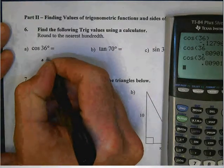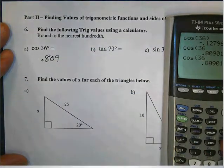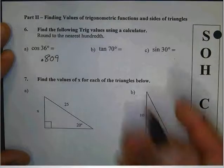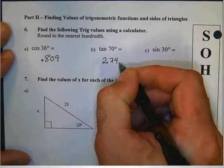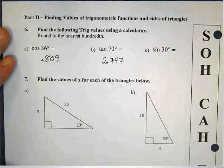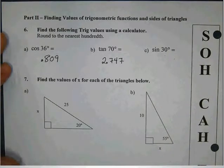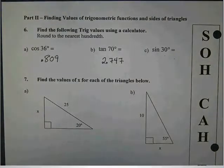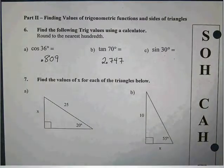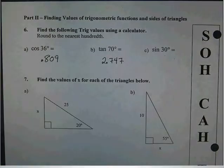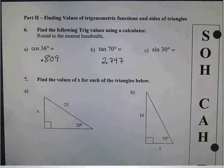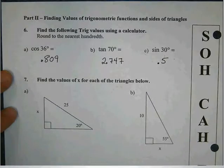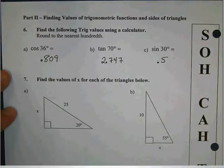And then you should be able to put in the cosine of 36 and get 0.809. Does it work now? Let's try the next one. Someone punched in tangent of 70. What do you get? You should get 2.74. Let's try our last one. Sine of 30. Does everybody get 0.5? So we need to be comfortable using our calculators.